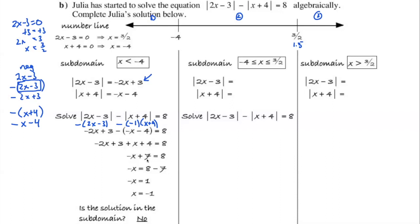So solving this equation in section 1: negative 2x plus 3 minus negative x minus 4 equals 8. Distributing, we get negative 2x plus 3 plus x plus 4 equals 8, which simplifies to negative x plus 7 equals 8. Subtracting 7, we get negative x equals 1, so x equals negative 1. However, the subdomain requires x less than negative 4. Since negative 1 is not less than negative 4, this is a contradiction — no solution in this section.